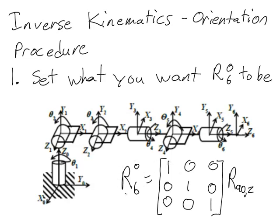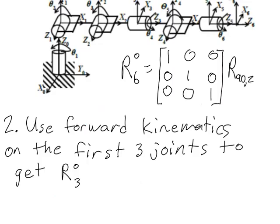Once I have a matrix for R06 with actual numbers, not variables, in each of these positions, then I can move on to step two of my procedure. Step two is to use forward kinematics just on the first three joints—the ones that are responsible for positioning the end effector—in order to get the rotation matrix R03.